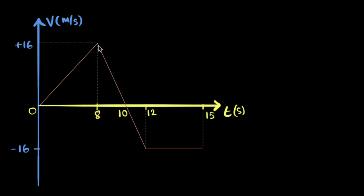Then what happens? The graph goes down. Does it mean the car is going back? No. This means now the velocity decreases. For the next two seconds, you can see the velocity decreases all the way to zero. That means at 10 seconds, the car comes to a stop.